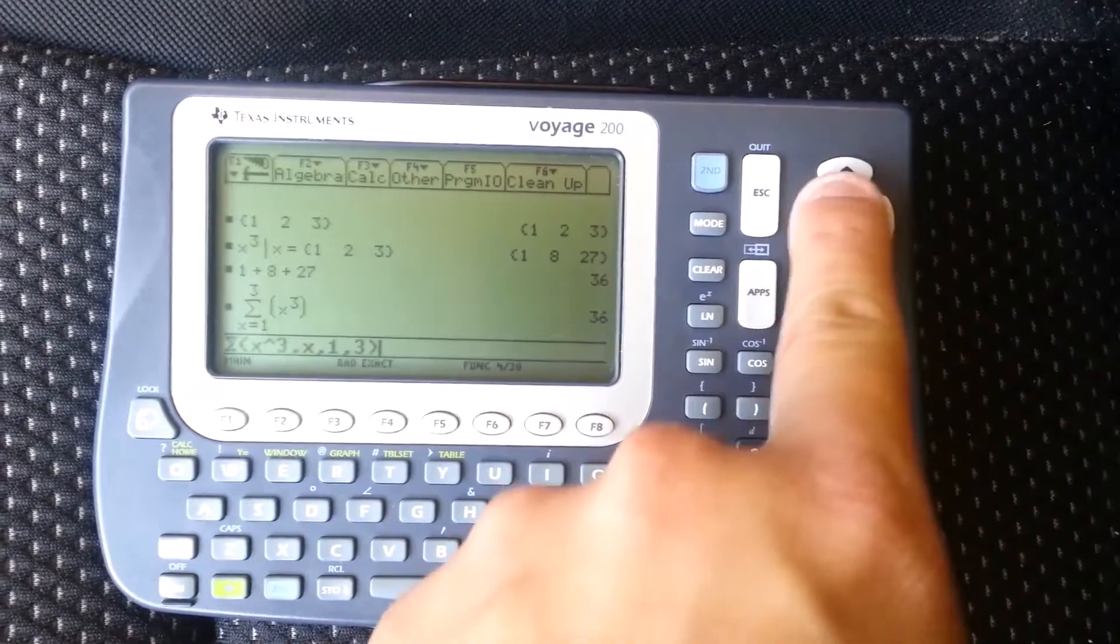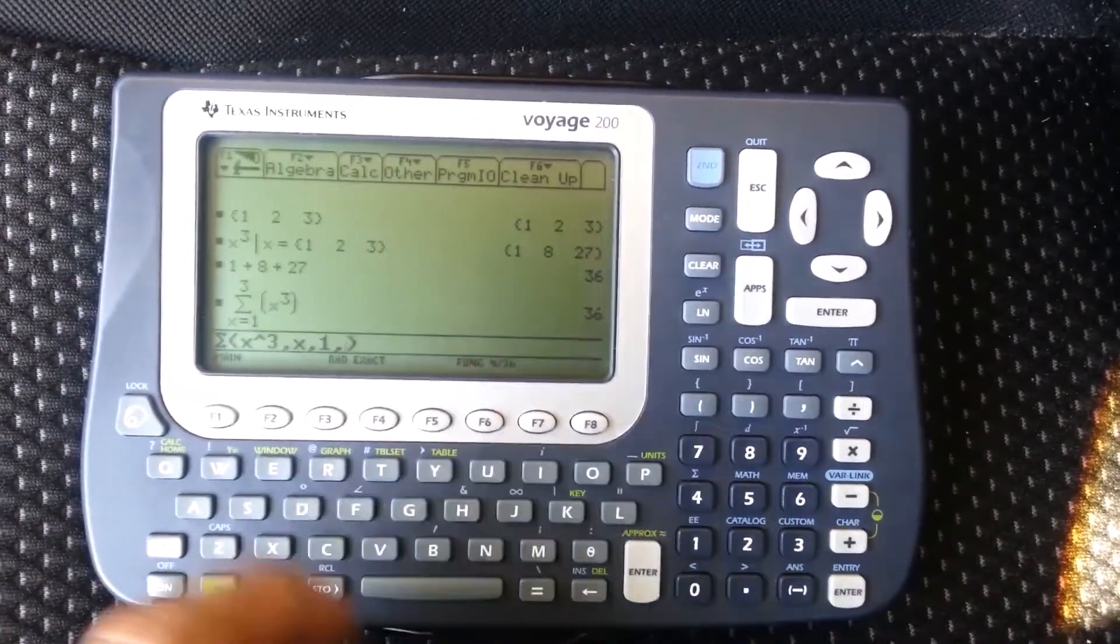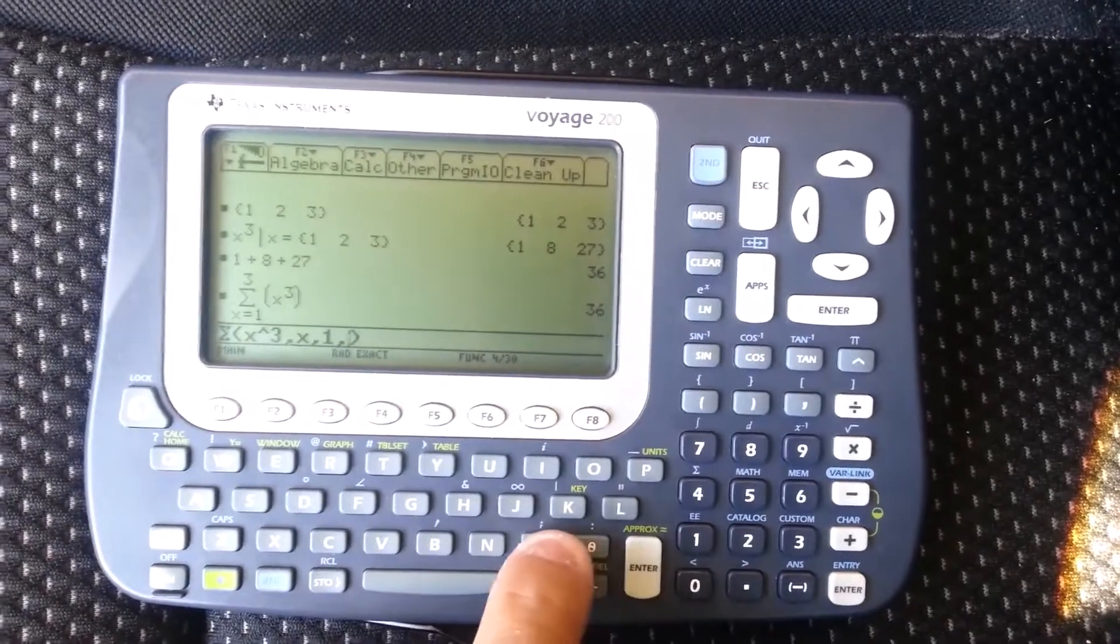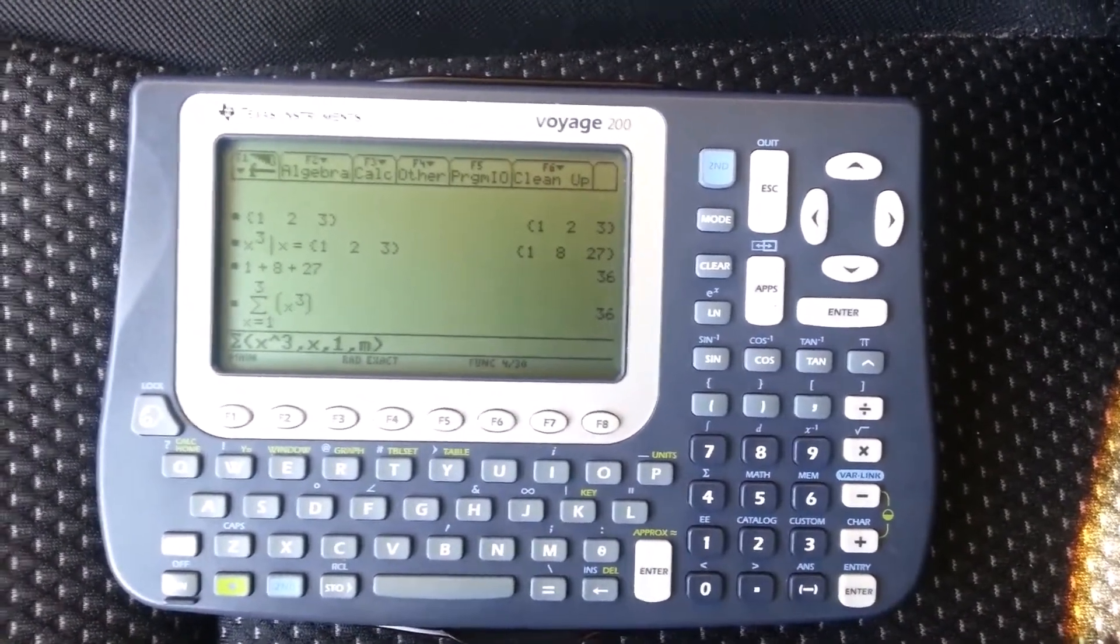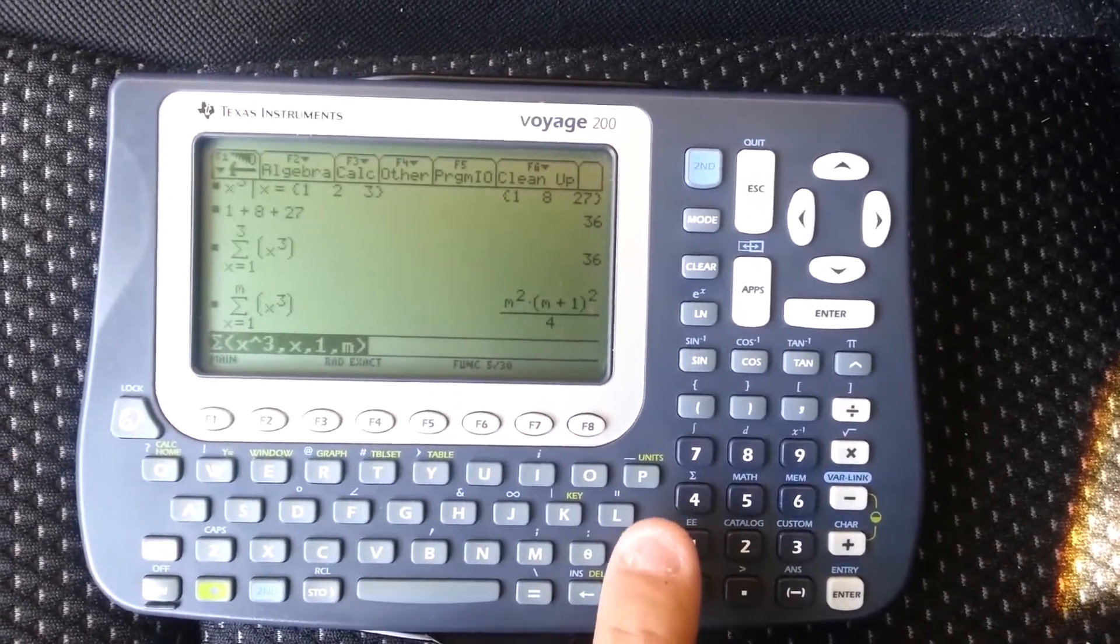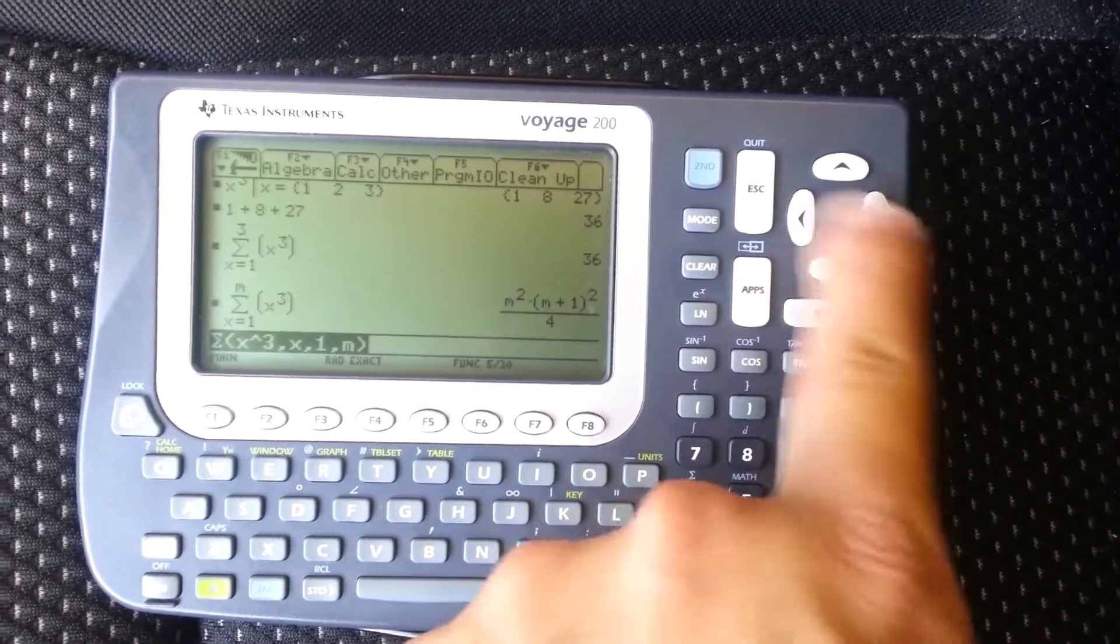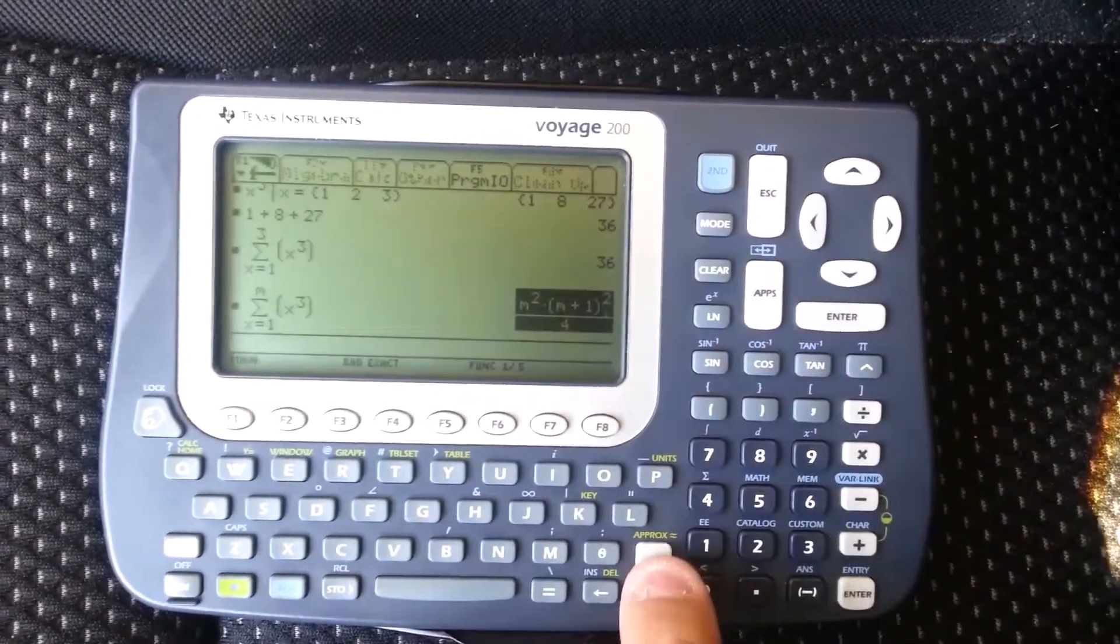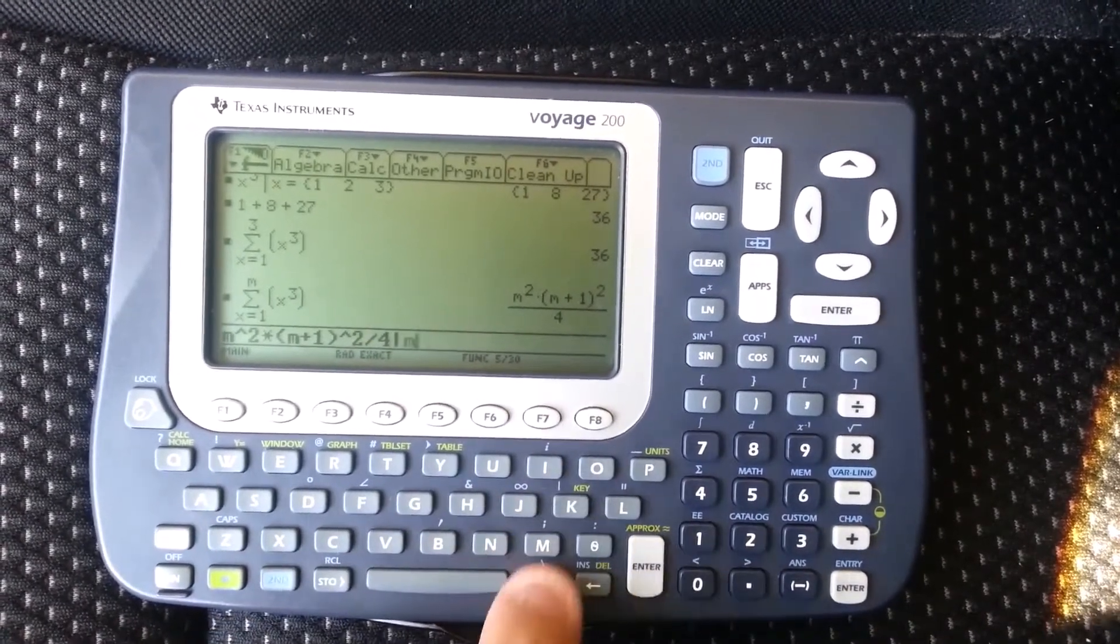You can also edit this a little bit, so this does symbolic manipulation. So instead of summing from one to a number, let's just call it sum to m where m is just a variable, so it can be any number. And you get m squared times m plus one squared, all of that divided by four. So you can just say let's evaluate it where m equals three and we'll get 36.